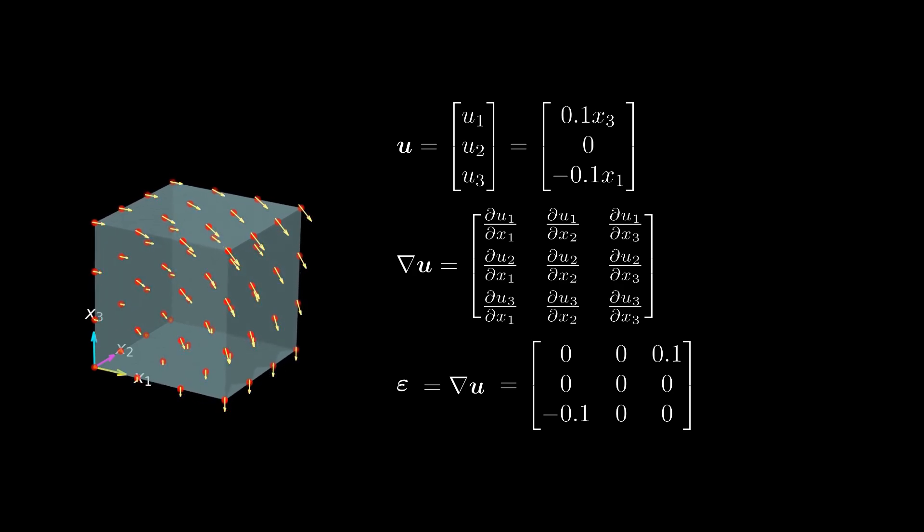Now the following question arises. Can we take the displacement gradient and somehow remove all contributions that belong to rotation? If this would be possible, then all we would have left would be a good measure of deformation. Guess what? It is possible to do that, all we need is a short mathematical interlude.